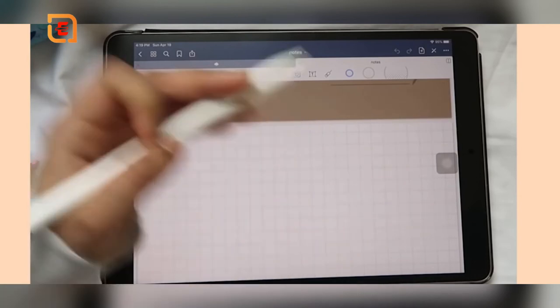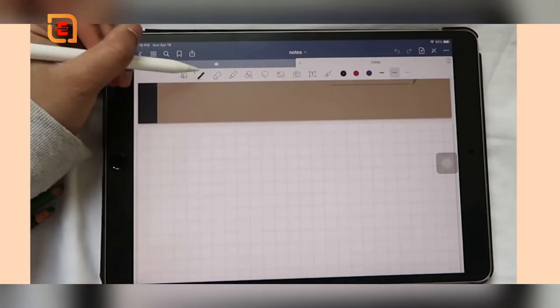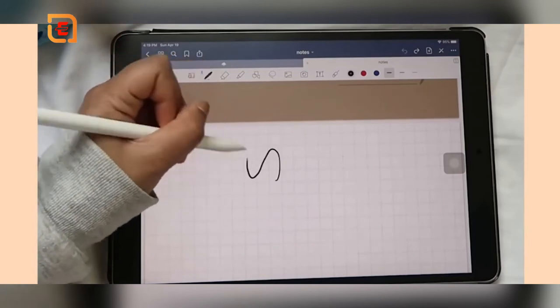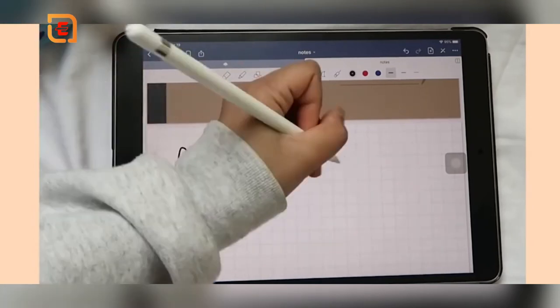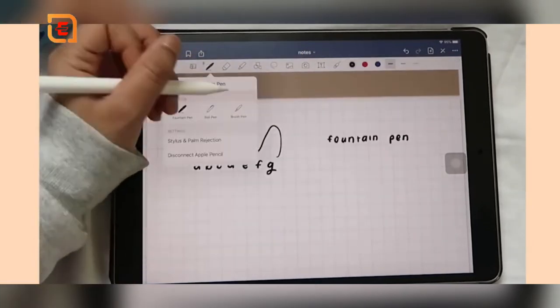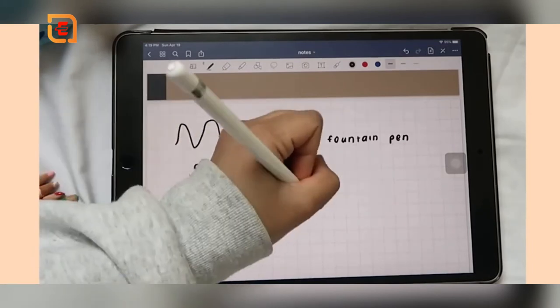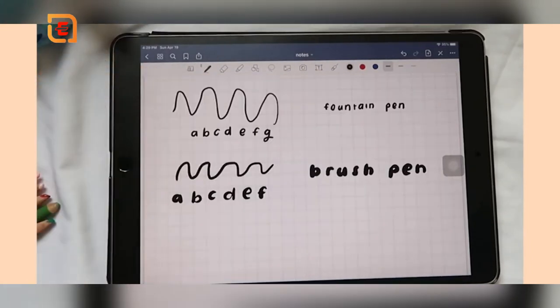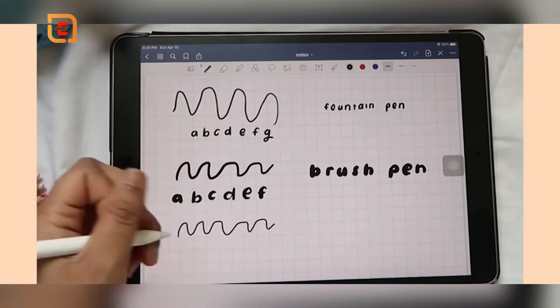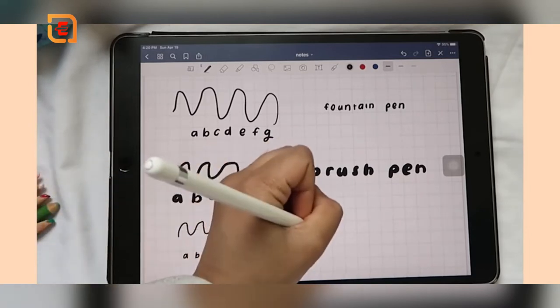The GoodNotes app comes with three pens and my favorite one to use is the ball pen. I used to use the fountain pen last semester, but I don't really like how it looks and I think the brush pen is supposed to be used for fancier titles, so I don't use that one either. The ball pen is the most like using an actual pen or pencil and it is true to your own handwriting, so it's the one that I use the most often.